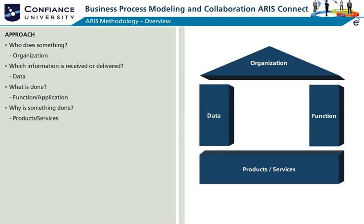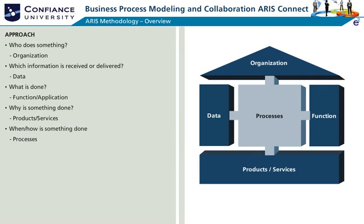The output view describes why something is done. It illustrates the outputs which are an outcome of the processes. The process view describes when and how something is done. It represents the sequencing and decisions of processes. Being at the center, this view helps to show how processes are connected to resources, data, and the functions of the business.